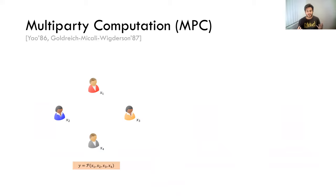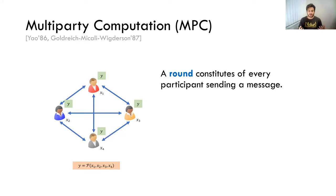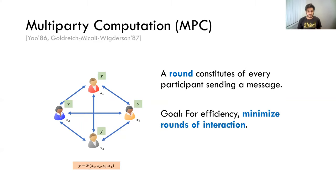What is multi-party computation, or MPC? It's a mechanism that allows parties to compute a joint function over their private inputs. By executing a protocol, they do so by exchanging messages. At the end of this protocol, everybody has the output. Since we're going to talk about round complexity of these MPC protocols a lot, what constitutes a round? It simply constitutes every participant sending a message. For efficiency purposes, it's best to minimize the number of rounds of interaction.